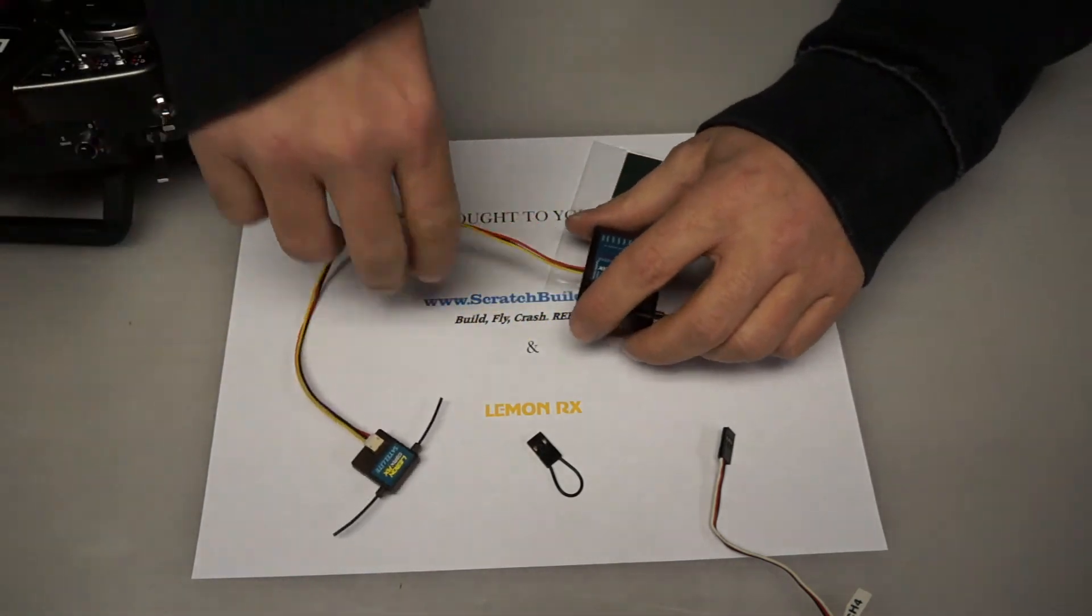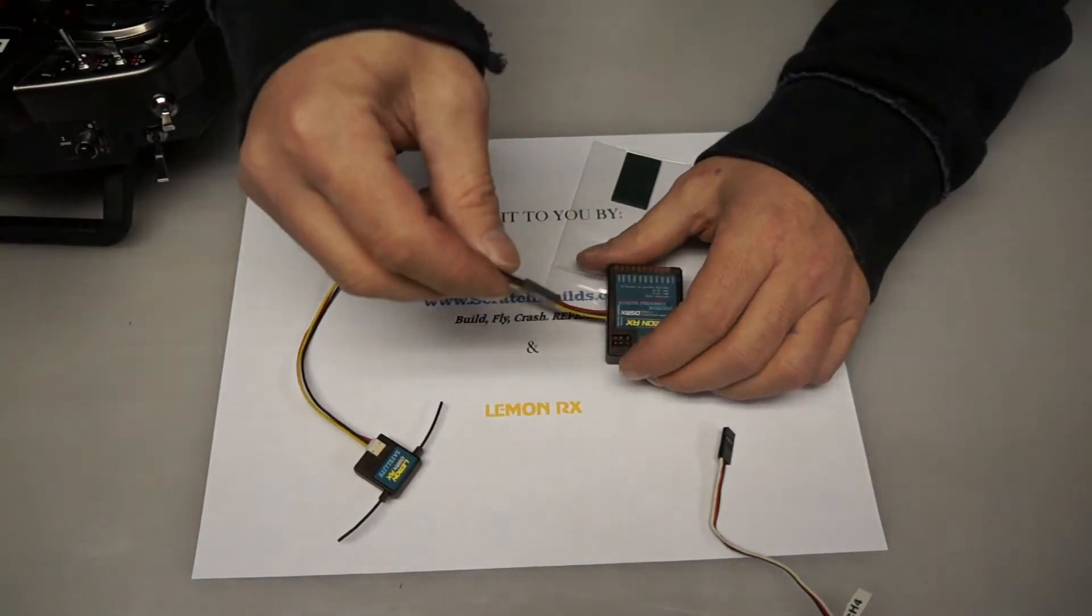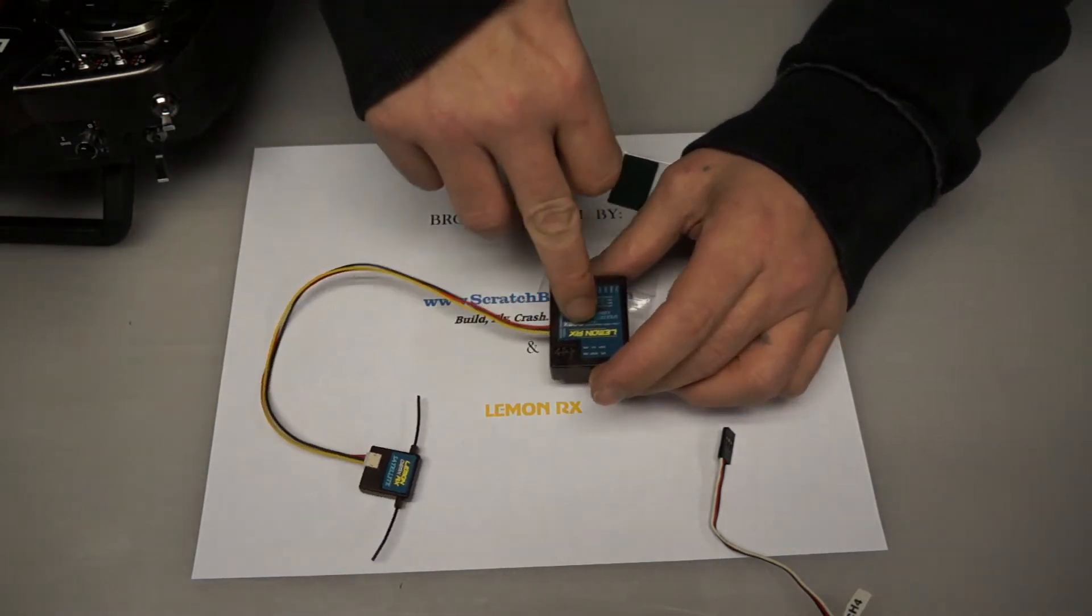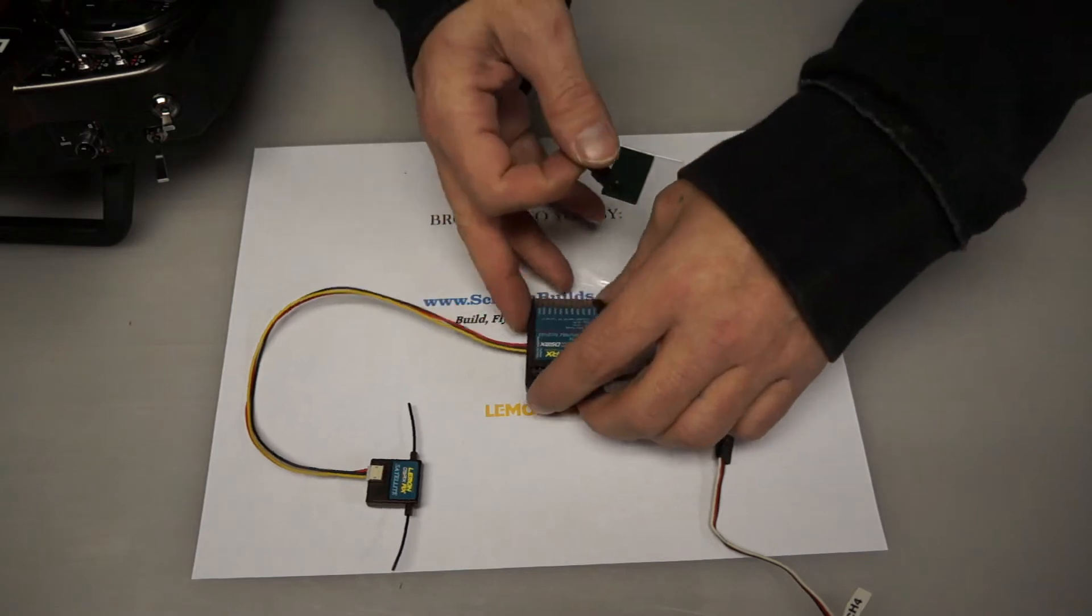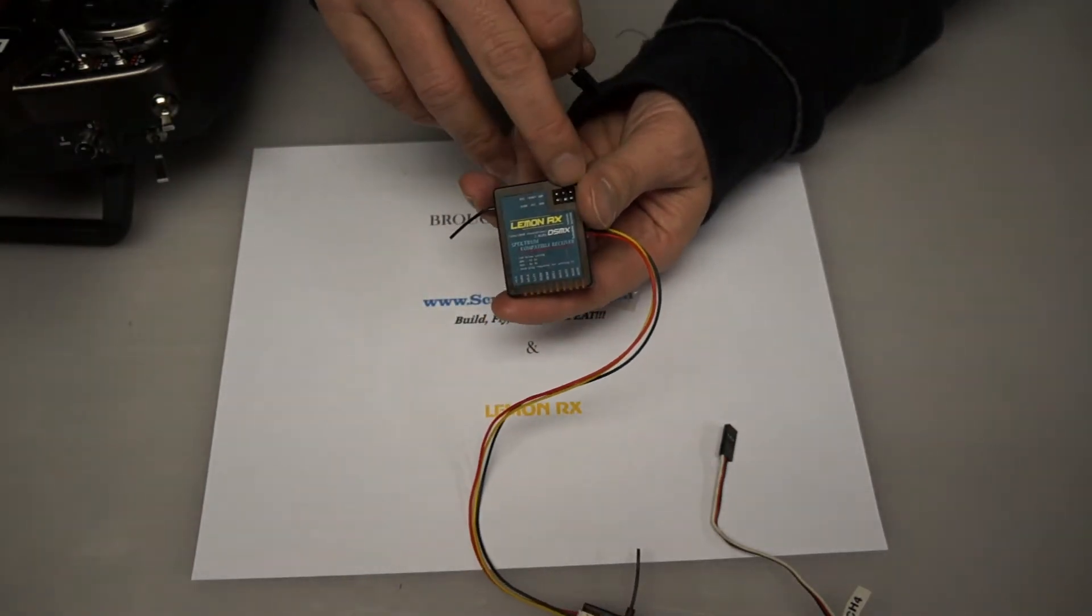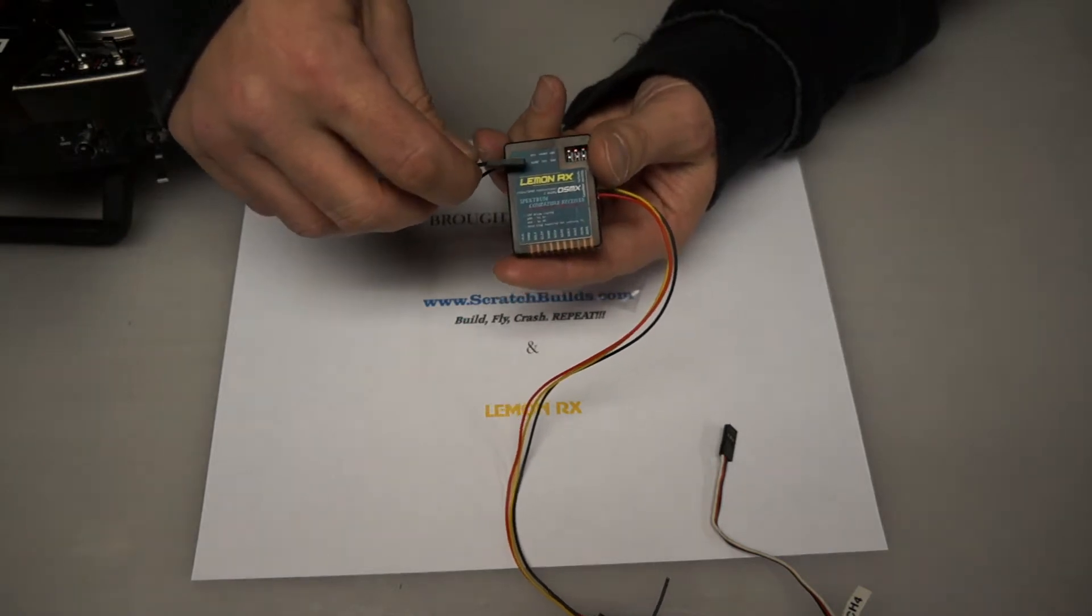The next thing that we are going to do is take the provided bind plug and plug it into the receiver. The Lemon receivers have a bind port on the top of it and it's clearly marked and it says bind.